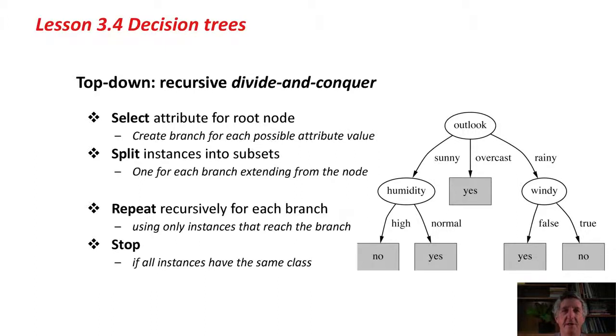J48 is based on a top-down strategy, a recursive divide-and-conquer strategy. You select which attribute to split on at the root node, and then you create a branch for each possible attribute value.